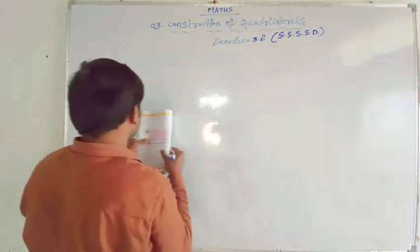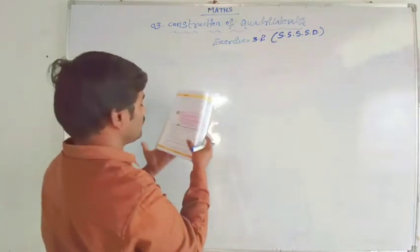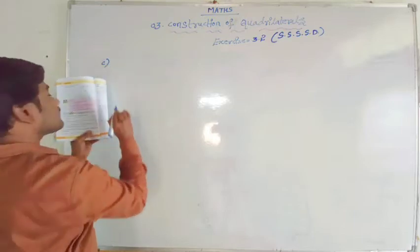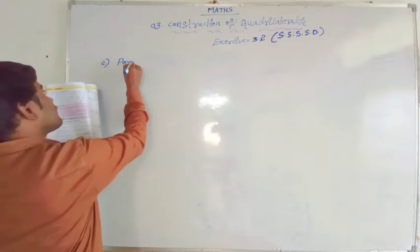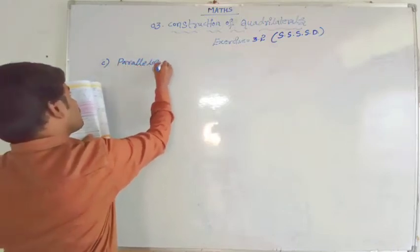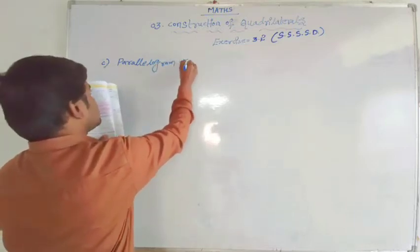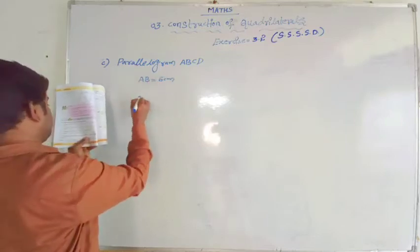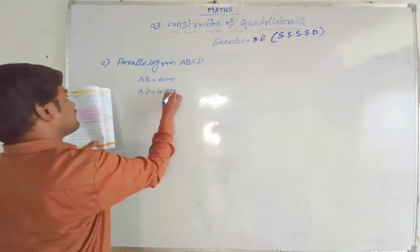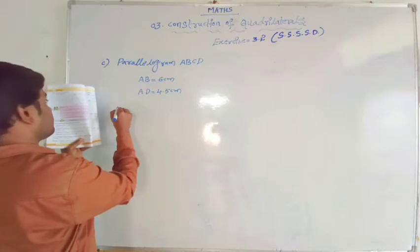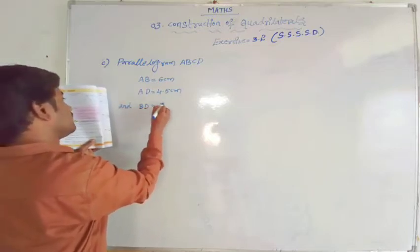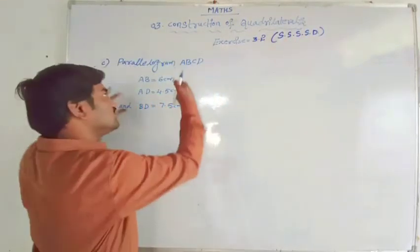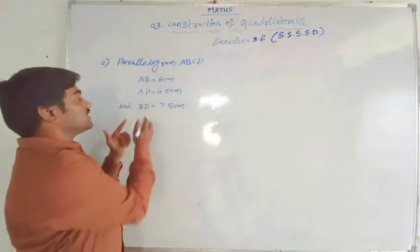There are 4 questions here overall. I will do 2 of the questions from this exercise; the remaining 2 you have to try. I will be going for question number C. We have to draw parallelogram ABCD. In that, AB equal to 6 centimetres, AD equal to 4.5 centimetres, and BD equal to 7.5 centimetres. You can ask: sir, we are discussing 4 sides and 1 diagonal, but here they have given only 2 sides and 1 diagonal.